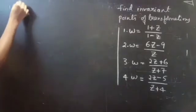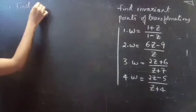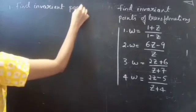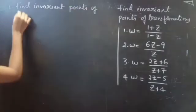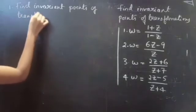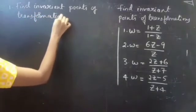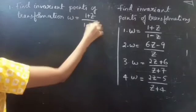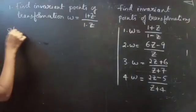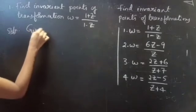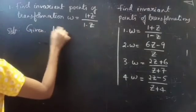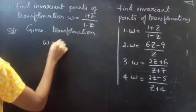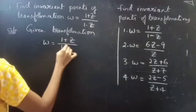First problem: find the invariant points of the transformation ω equals 1 plus z by 1 minus z.